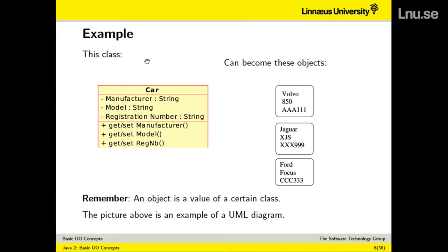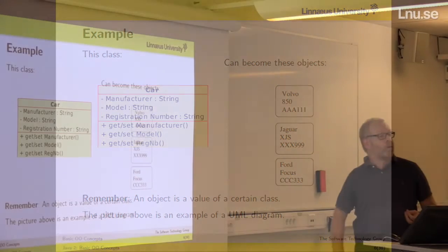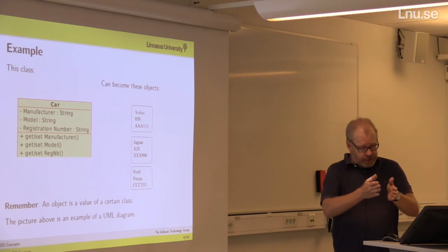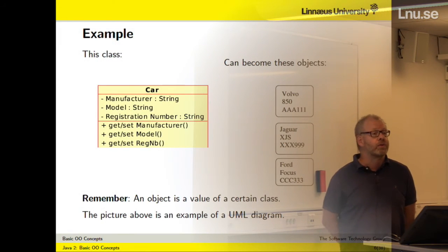Another example, just to remind you of the difference between a class and objects. Here I have something that illustrates a class called Car. Each car has a manufacturer, a model, and a registration number — these are the facts we associate with a car. And also what we can do with it: we can update these facts. This is a class describing what a car should look like. Then we have objects — they are individual cars. One particular car is a Volvo, another is a Jaguar, and a third is a Ford. A class describes what all the objects should look like, and an object is a particular car, student, or employee.